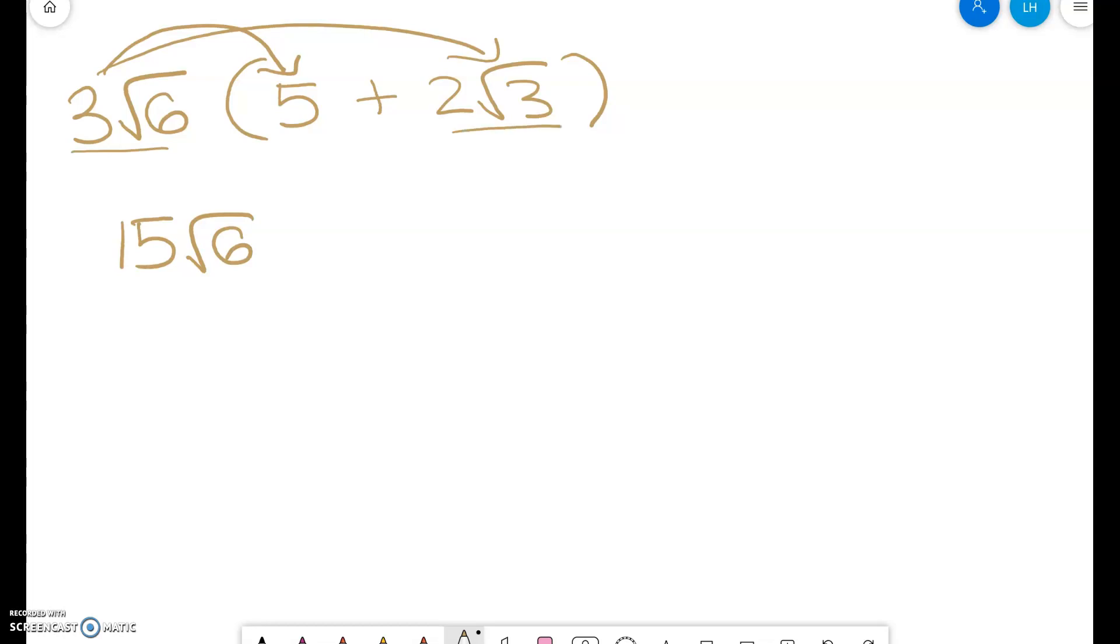So when I have two terms that have both a number and a radical, I multiply the number part together, so I get 6, and I multiply the radicals together because square root of 6 times square root of 3 is square root of 18.